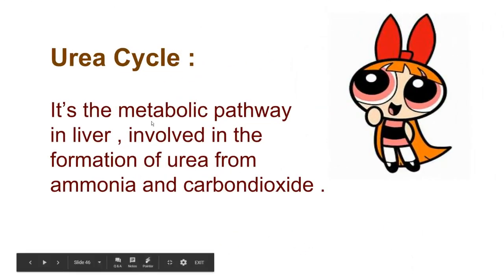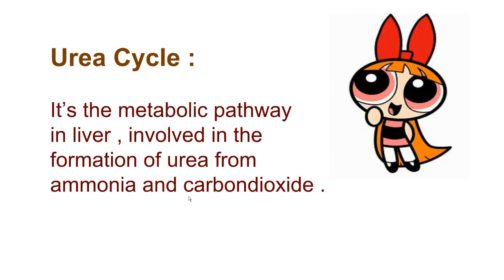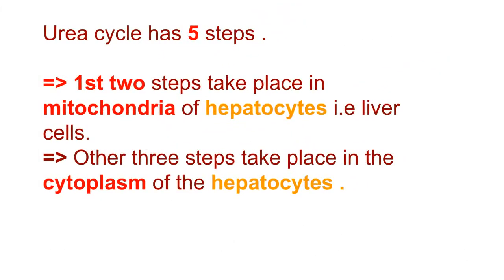The urea cycle is the metabolic pathway in the liver involved in the formation of urea from ammonia and carbon dioxide. The first two steps take place in the mitochondria of hepatocytes (liver cells), and the other three steps take place in the cytoplasm of the hepatocytes.